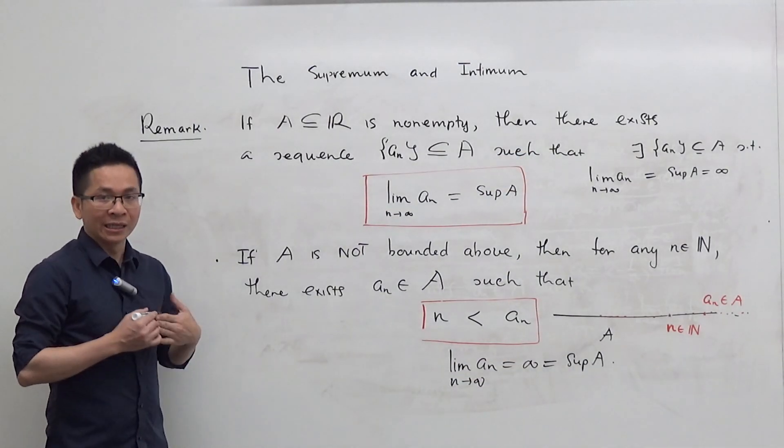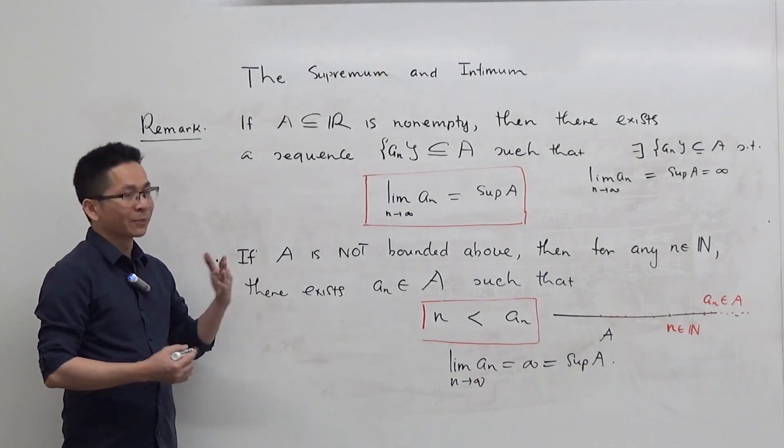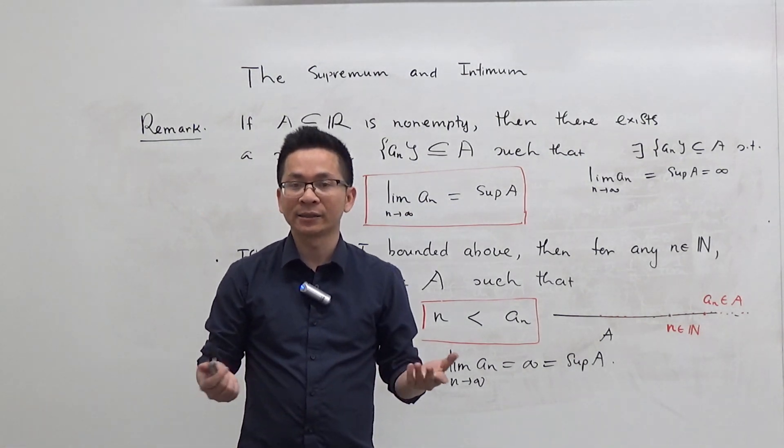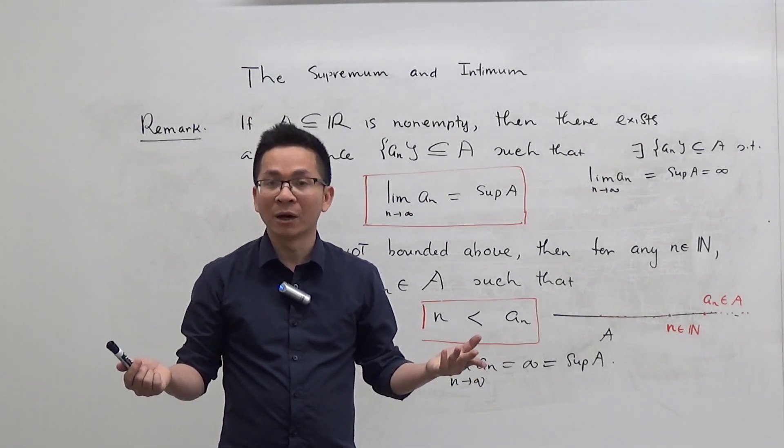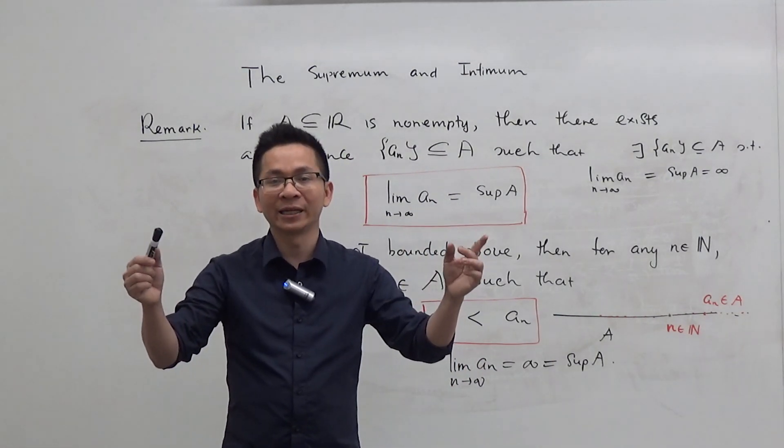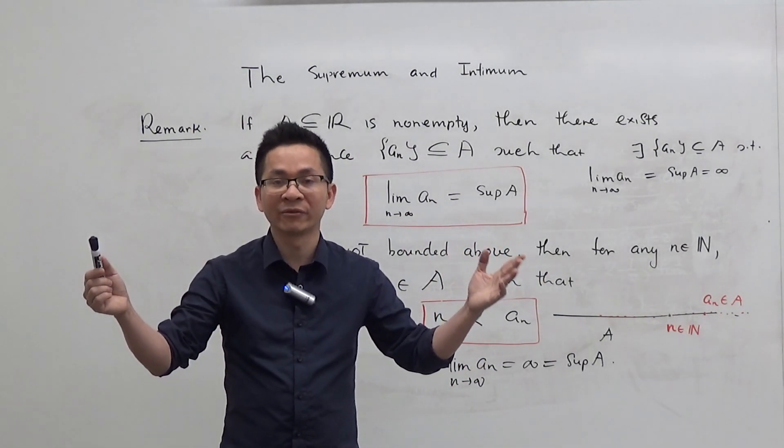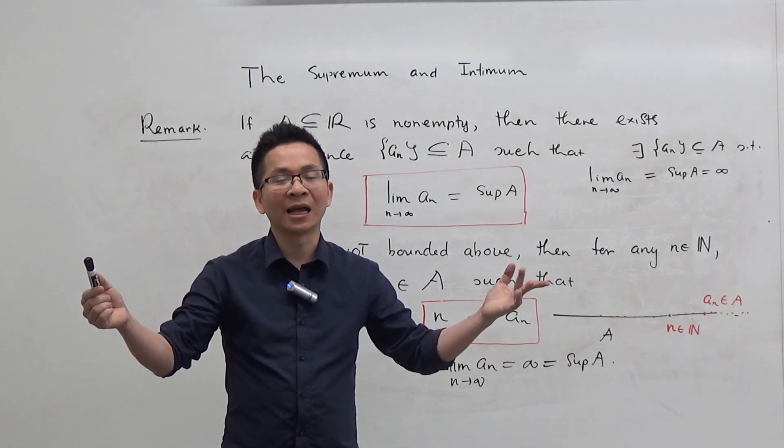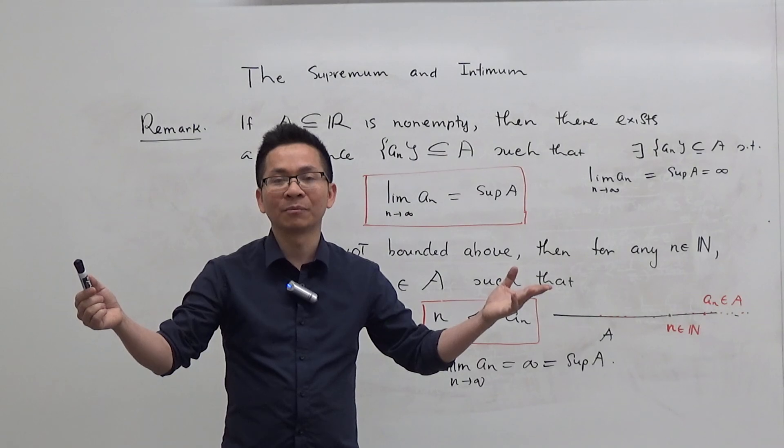Let me talk about an important remark. From the previous proposition, we know that if A is non-empty and bounded above, then we can find a sequence in A that converges to the supremum of the set. But the question now is, what if A is non-empty but not bounded above?